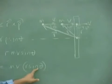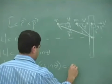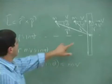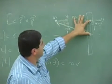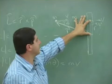However, R sine of theta is equal to what? R sine of theta, that's this component of the R, which we can write as H.